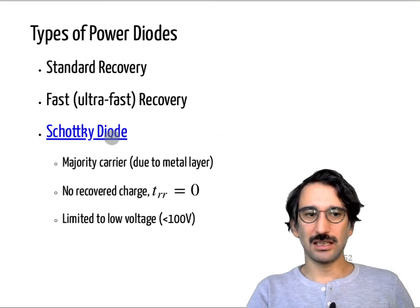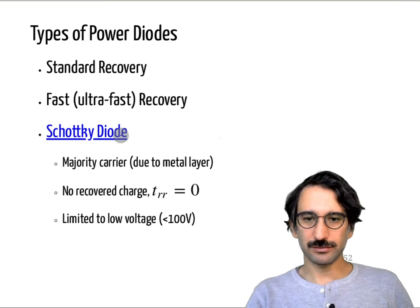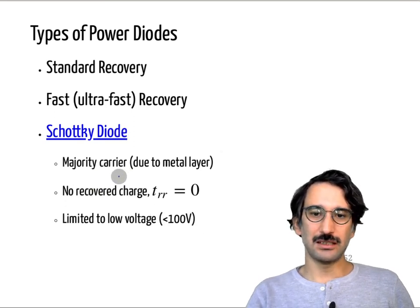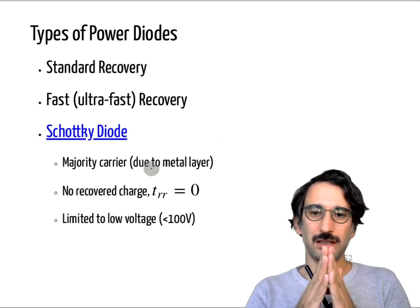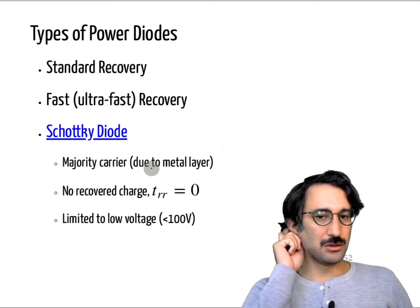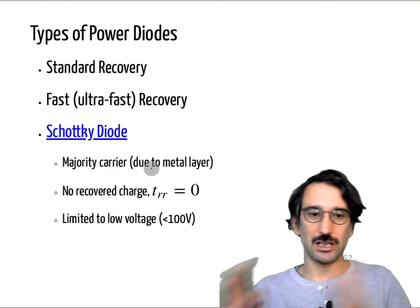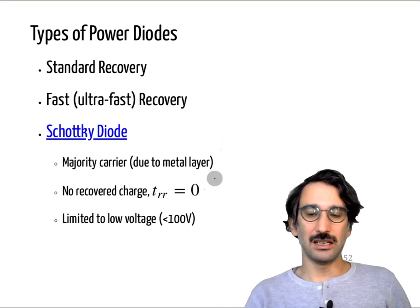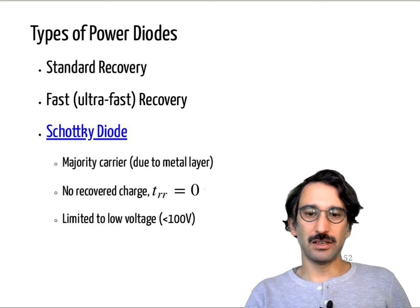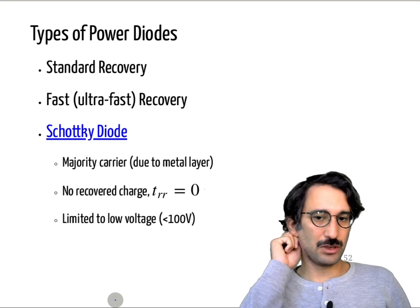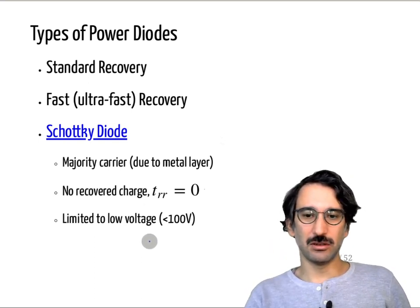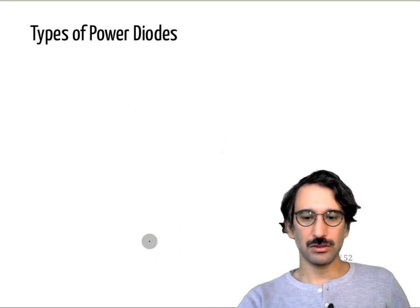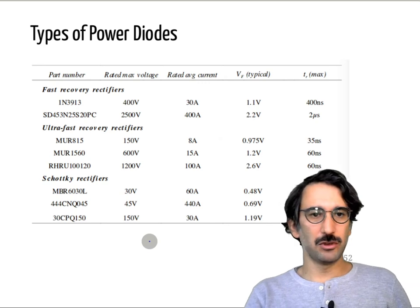Then there are Schottky diodes. These are majority carrier devices with a metal-semiconductor barrier, so they don't need to move charges from the p junction to the n junction. Because of that they have no reverse recovery time — they are the fastest and have no switching losses from reverse recovery. Unfortunately, they cannot block high voltages; that metal layer is not capable of blocking high voltages, so they are limited to low-voltage electronics — you cannot find a Schottky diode for a 1000 V application.